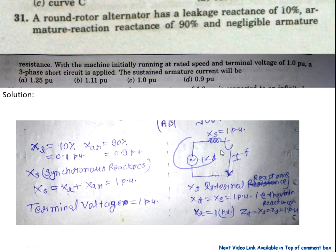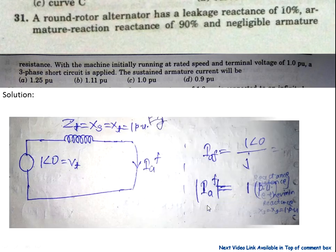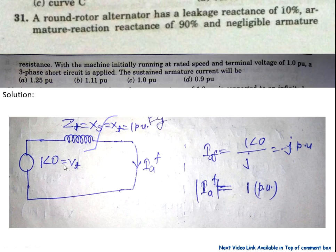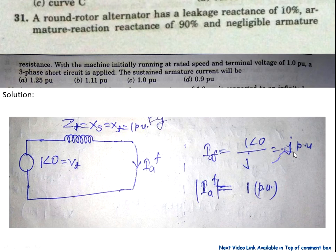Now find the Thevenin equivalent of this circuit. The total internal reactance is 1 per unit and the open circuit terminal voltage is 1 per unit. Now find the fault current — the short circuit current IAF equals voltage divided by impedance, that is 1 divided by j1, giving a magnitude of 1 per unit. So the answer C is correct.